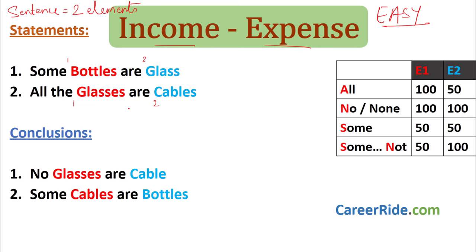Elements are things like bottles, glass, red, pink, circus, lion, tiger. The joining words like 'some', 'all', 'the', 'are', 'is' are not elements. Every sentence will have only two elements. Now, in syllogisms there are four words which are most important: first is 'all', second is 'no' or 'none', third is 'some', and fourth is 'some not'.